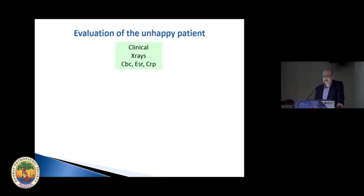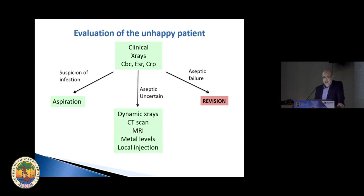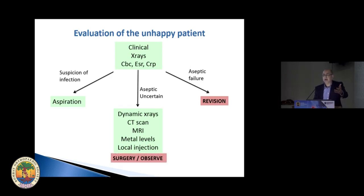How do I evaluate an unhappy patient? First I do the basic clinical x-rays, CBC, ESR, and CRP. If I feel this is a straightforward case of aseptic failure, I go ahead without further tests and do a revision. If I have a suspicion of infection, I'll do an aspiration — I won't do any further tests before the aspiration. If I don't know what's going on, I'll do further tests: dynamic x-ray, CT, MRI, metal levels, or a local injection, depending on my clinical suspicion.